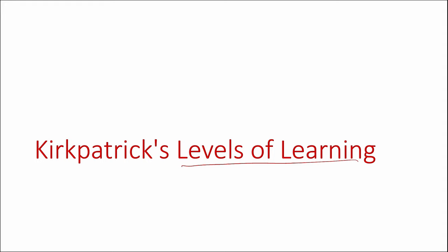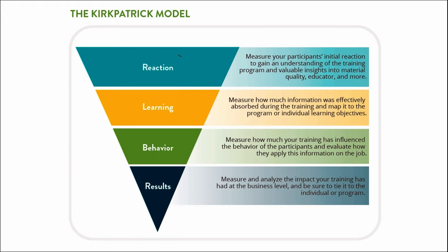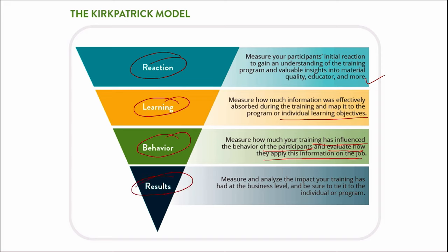Next is Kirkpatrick's model for levels of learning. The first stage is reaction — measuring participants' initial reaction to gain understanding of the training program and insights into material quality and the educator. We then move to learning — measuring how much information was effectively absorbed during training and mapping it to learning objectives. Then behavior — measuring how much the training influenced the behavior of participants in day-to-day practice. Finally, results — measuring and analyzing the impact the training has had at the business level.